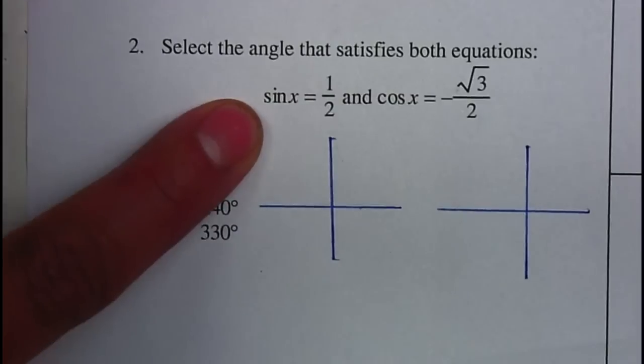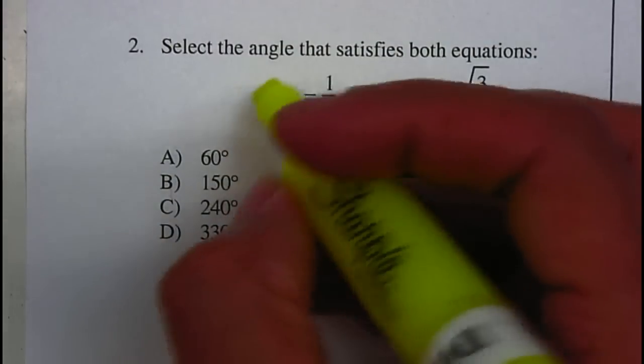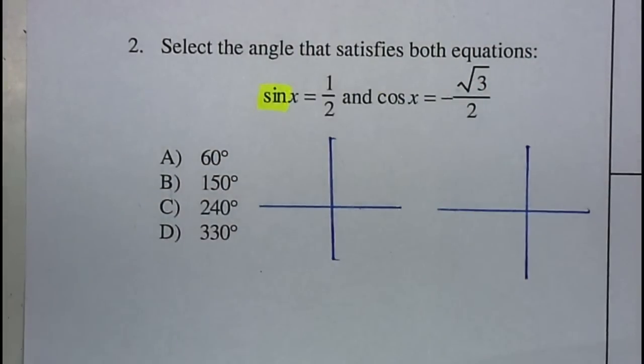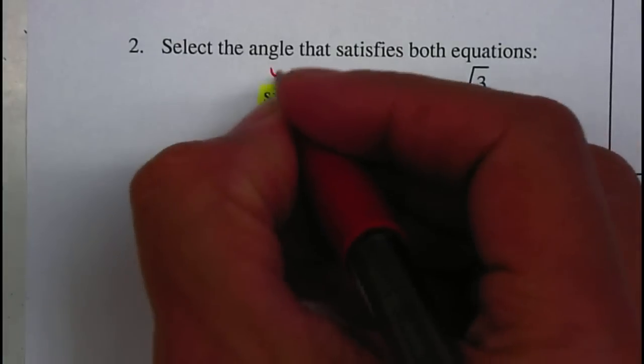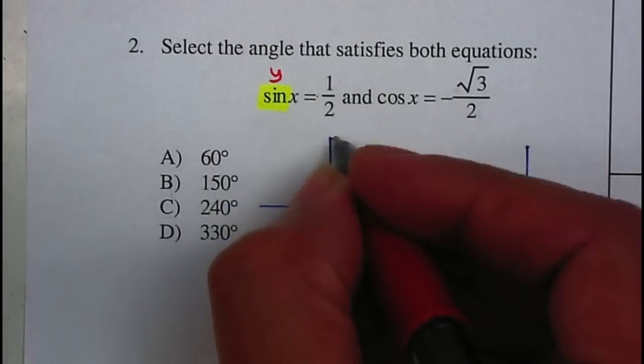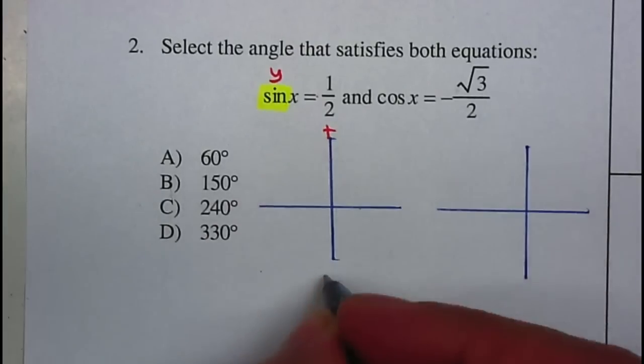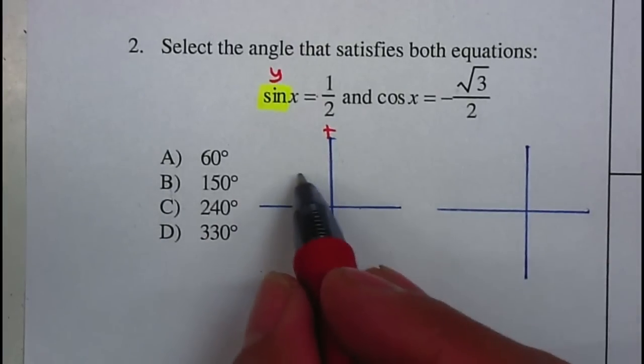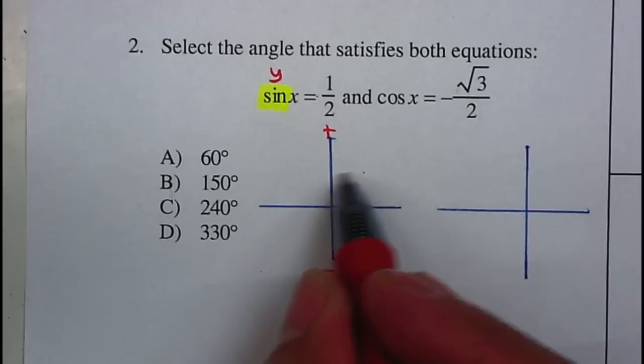For the first one, sine, you need to think is that your x or your y? Sine has to be your y value, and your y value has to be positive. This is your y, this is positive, this is negative. So therefore it has to be on either the first quadrant or the second quadrant.